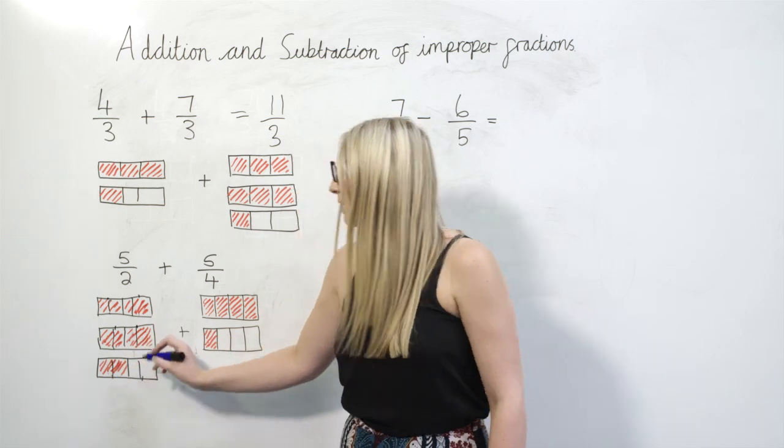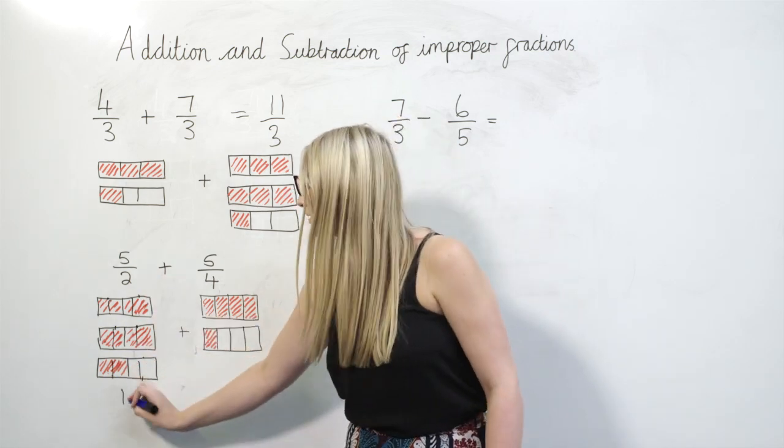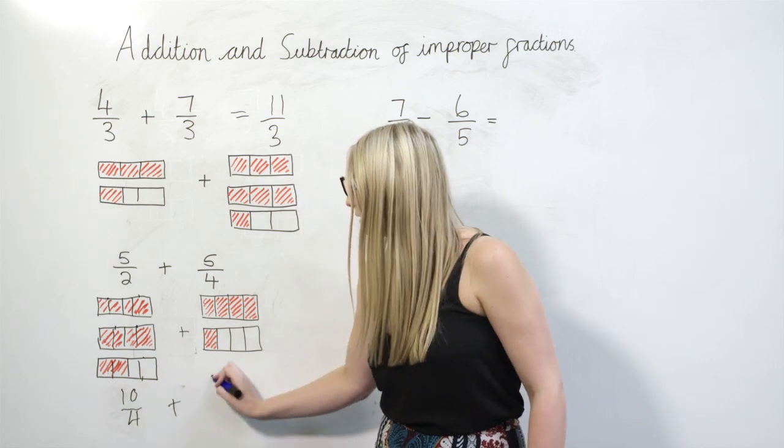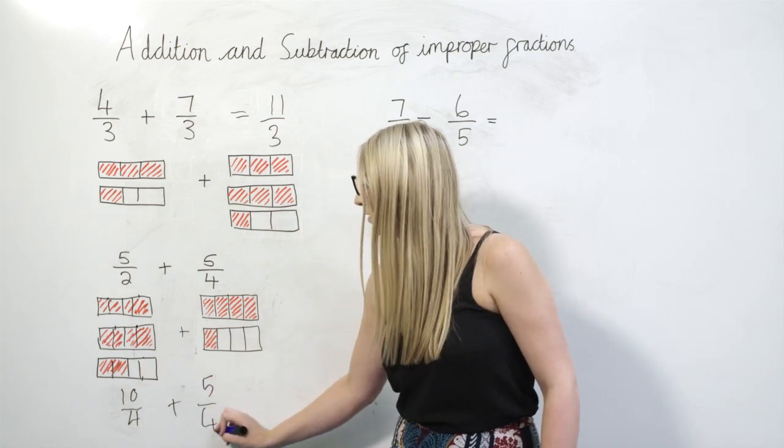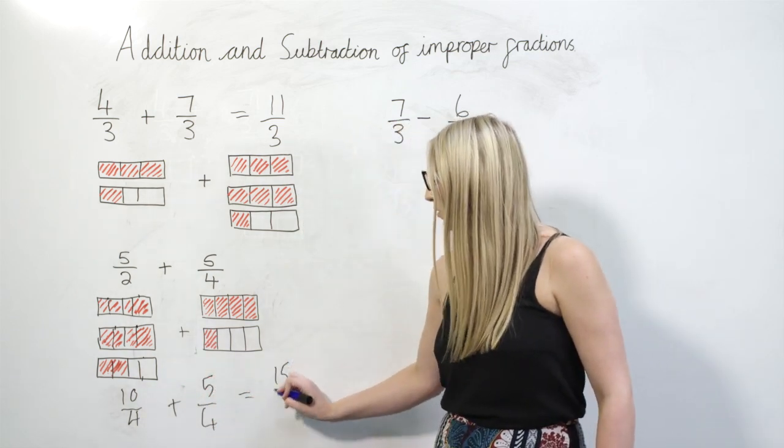So now we'll see that I've got ten quarters and I can add that to my five quarters to give fifteen quarters.